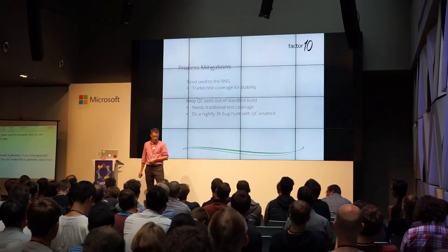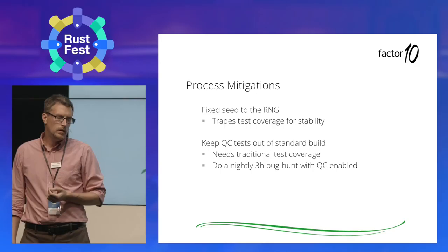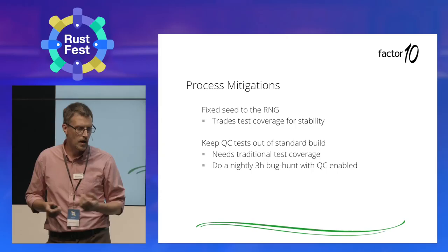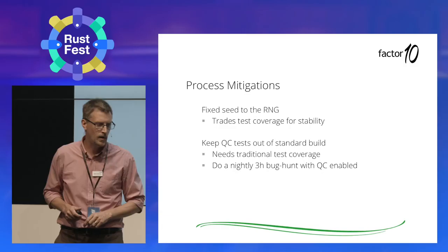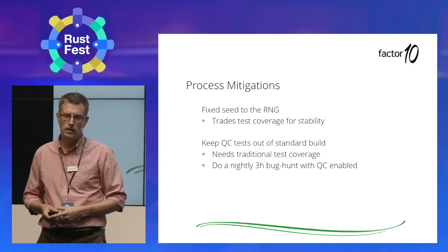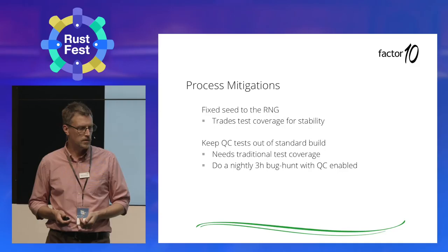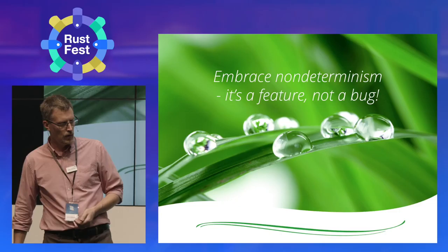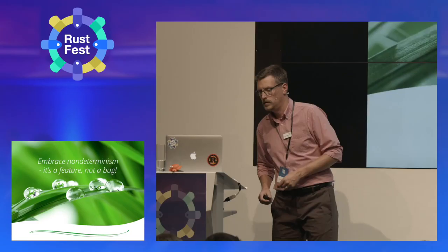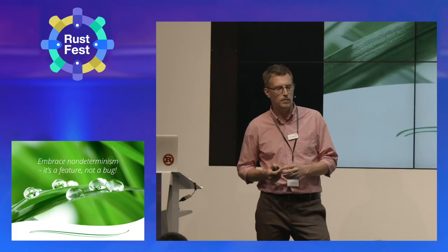On the process level, you could look at fixing the seed to the random number generator. However, that trades test coverage for stability, which may not be a good trade-off depending on whether you want to find bugs or want your build to always work. You could also give in to these criticisms and say you don't run QuickCheck tests in the standard build — perhaps you use them for a bug hunt running in nightly CI just to flush out bugs. You could see it as a feature, not a bug: if you have a method to find more bugs, isn't that very valuable?